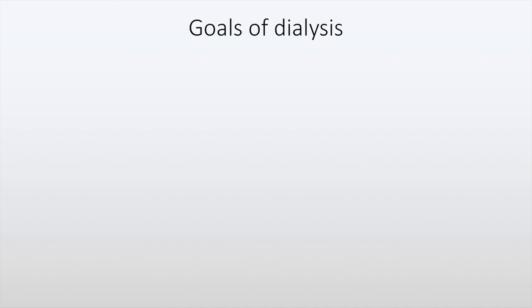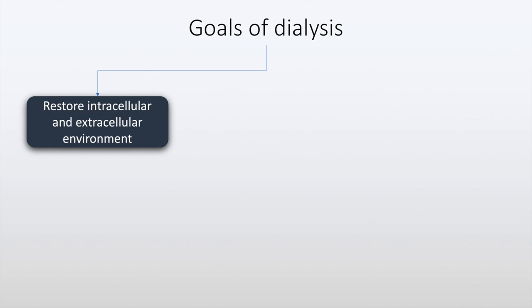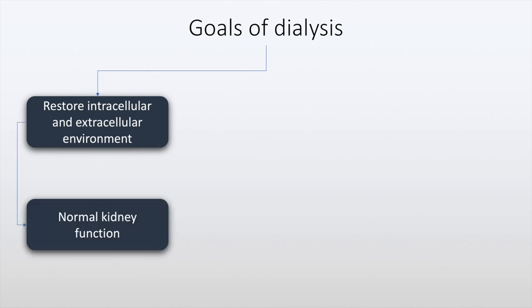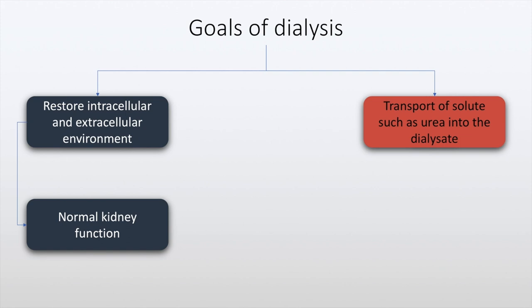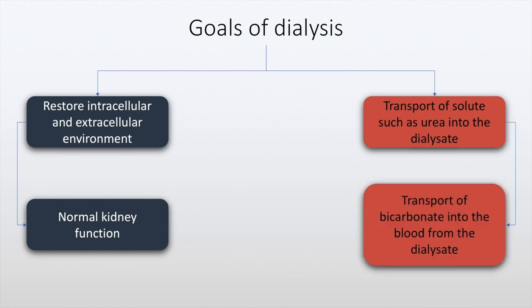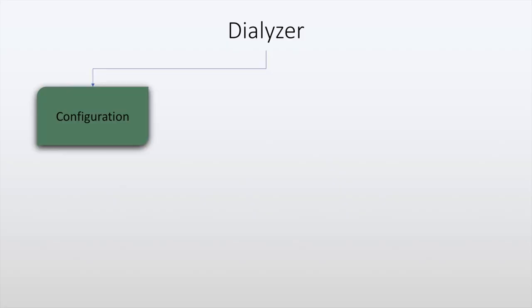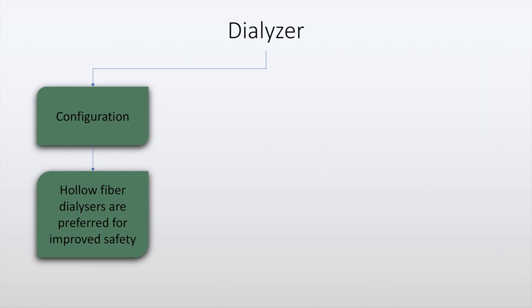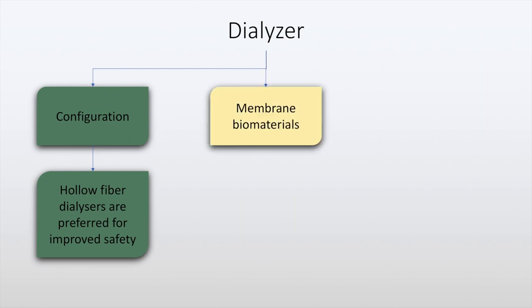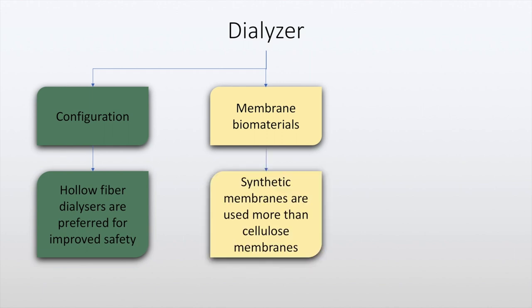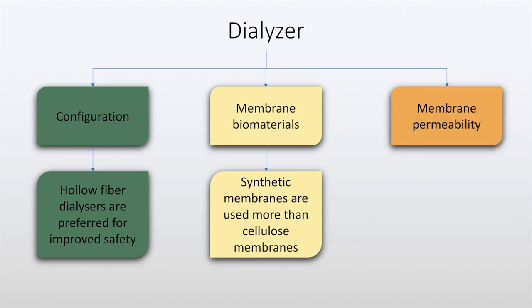The goal of dialysis is to restore an intracellular and extracellular environment similar to the normal functioning of the kidney. The transport of solute such as urea into the dialysate and transport of bicarbonate into the blood from the dialysate is also undertaken. The key components of the dialysis prescription are as follows. Dialysers are generally of hollow fiber configuration and are used because of improved safety. Membrane biomaterials being used recently include synthetic membranes, which have now almost completely replaced cellulose membranes.